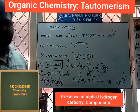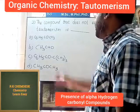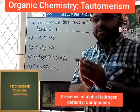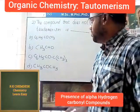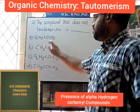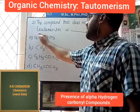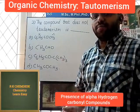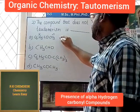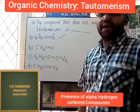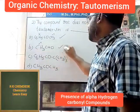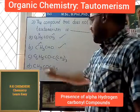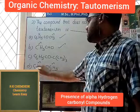Tautomerism: the question asks which compound does NOT exhibit tautomerism. Any choice with no alpha hydrogen. Acetophenone — benzene with alpha hydrogen. I can note the path.